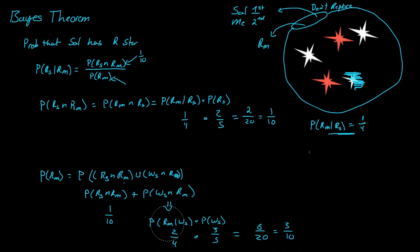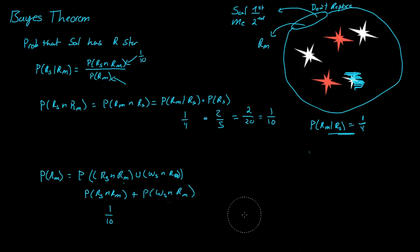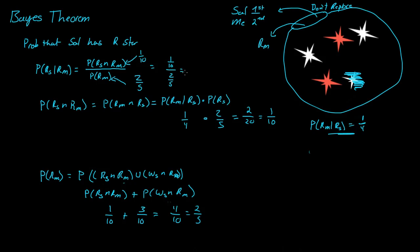So we just add: one-tenth plus three-tenths equals four-tenths, or simply two-fifths. So now we know the probability of me getting a red star is two-fifths. Then, this is equal to one-tenth divided by two-fifths, and that equals one-fourth.